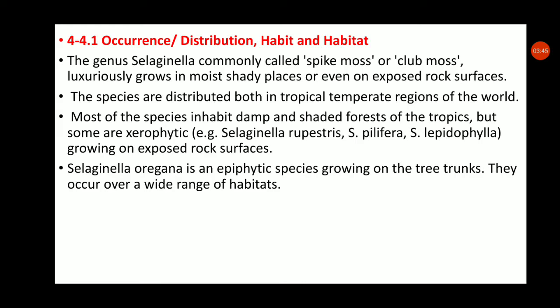Selaginella oregana is an epiphytic species — meaning it grows on other plants, specifically on tree trunks. Being epiphytic, it has hanging roots, and is therefore known as an epiphytic Selaginella.